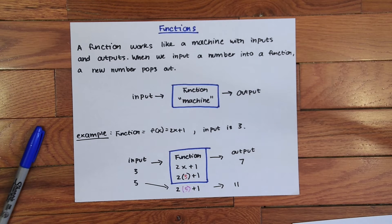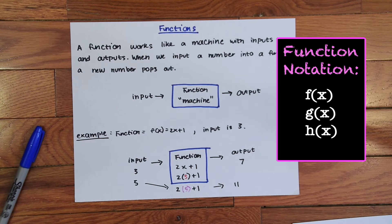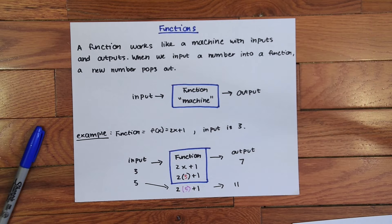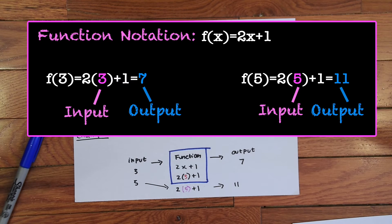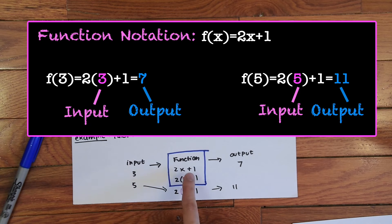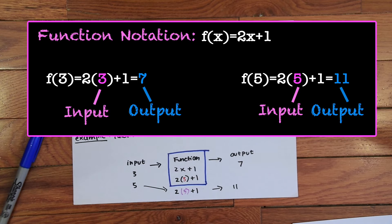So functions have their own notation. If you notice when we have f of x equals 2x plus 1, this can also be written as g of x, h of x or any other letter you could think of, but they're usually very commonly written as f of x, g of x or h of x. And another way to write what we just did in function notation is to say that we found the value for f of 3 by inputting it into f of x. So we found the value of f of 3 for f of x and then we found the value of f of 5 for f of x.